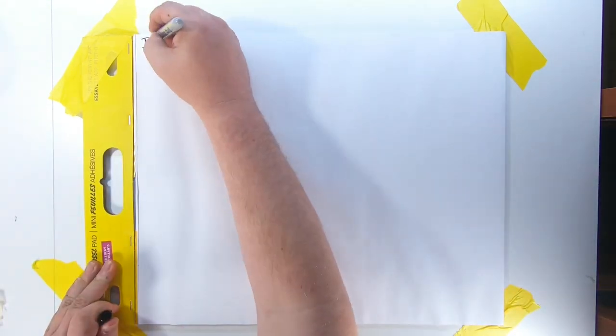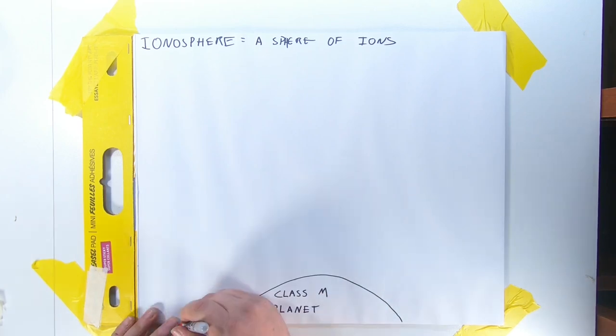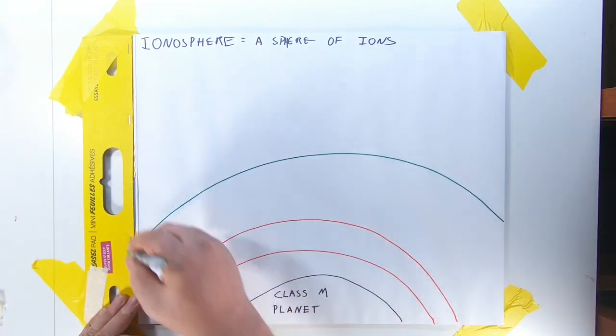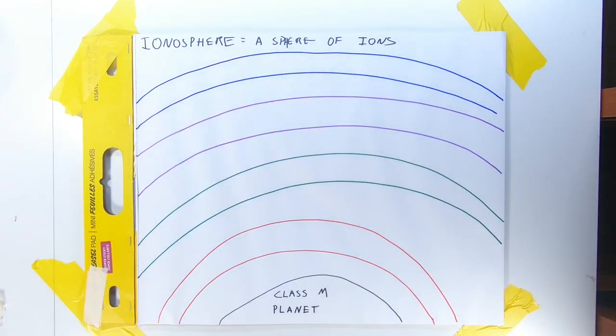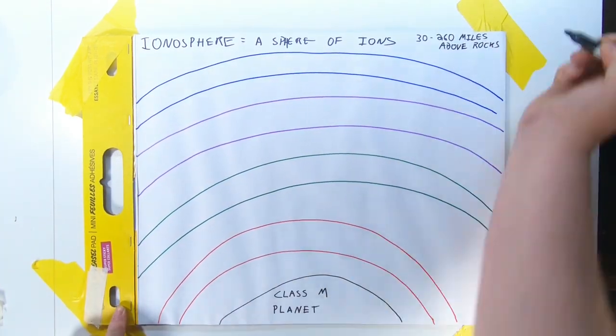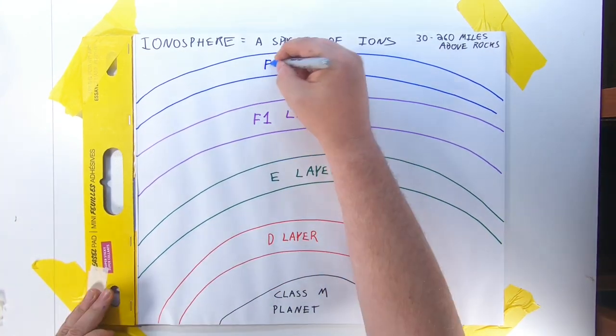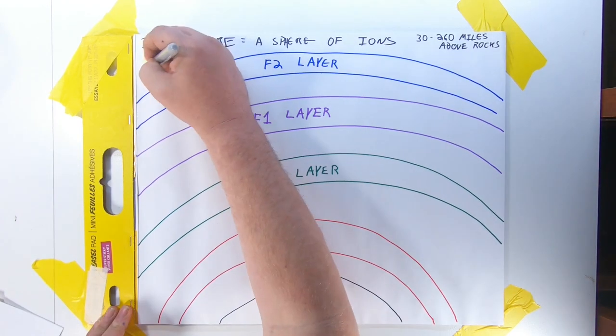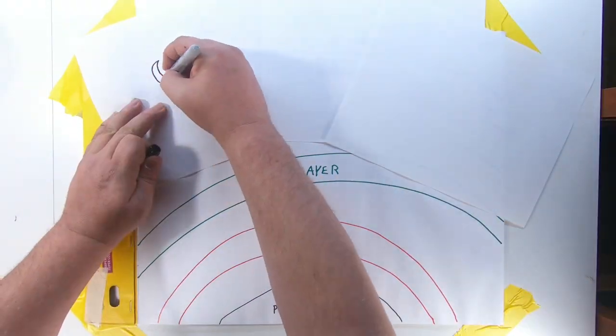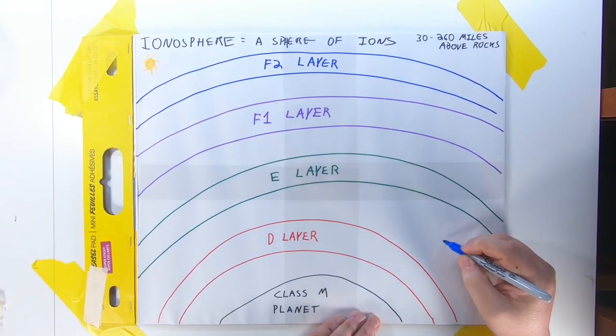Alright, now we need to talk about the ionosphere. It exists from 30 to 260 miles above the Earth, so visiting to see what it smells like is difficult. UV rays from the sun strike particles in the upper atmosphere, turning them into ions. Thus, the ionosphere. It is made up of several layers that are given letters. The layers we focus on are the D, E, F1, and F2 layers. The F1 and F2 layers exist during the day, but at night, they combine to become a single layer.